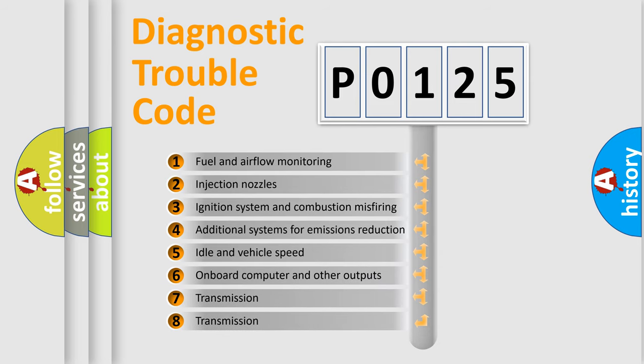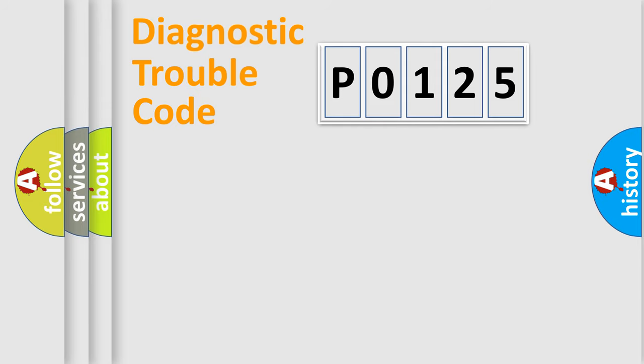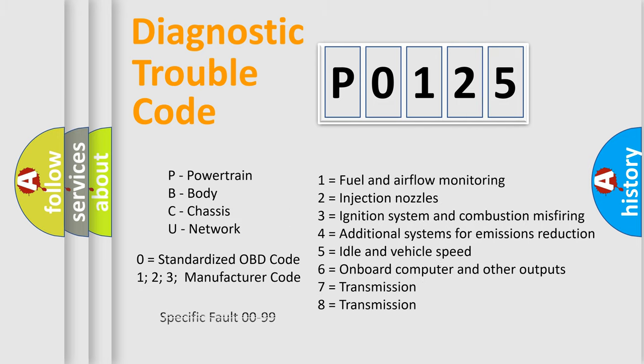The third character specifies a subset of errors. The distribution shown is valid only for the standardized DTC code. Only the last two characters define the specific fault of the group. Let's not forget that such a division is valid only if the second character code is expressed by the number zero.